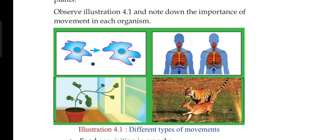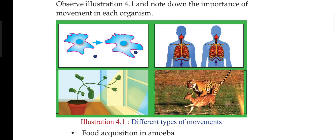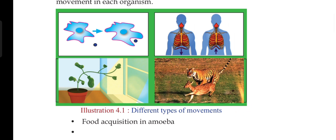Here is a picture, illustration 4.1. It shows that there are 4 types of movements. You can identify each one. The second type involves breathing in and breathing out. You can release and relax — that is a kind of movement.